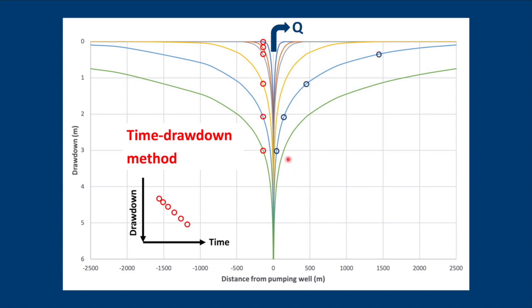If we pick a certain point in time and we measure the drawdown at various distances from our pumping well, then we can plot it like this and you'll see that the drawdown will decrease as we get away from our pumping well. And this is called the distance-drawdown method.